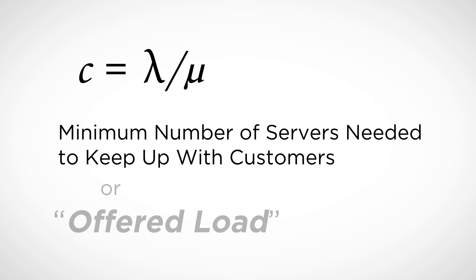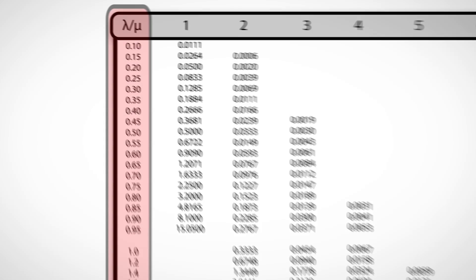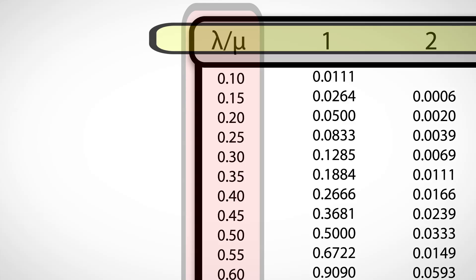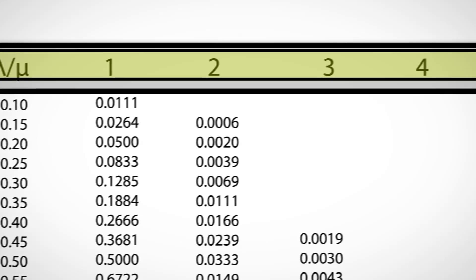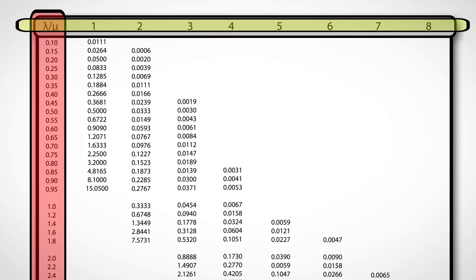We refer to this quantity as the offered load of the system. Using the offered load and the number of servers S, we can use the following table to determine the average number of customers waiting in the queue. There is a link to this table accompanying the video. Each row of the table corresponds to a different value of the offered load — that's lambda divided by mu. Each column corresponds to the number of servers, that's little S. So using both the offered load and the number of servers, we can look up the average number of customers waiting in the queue.